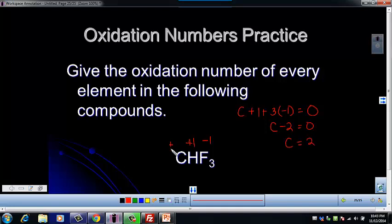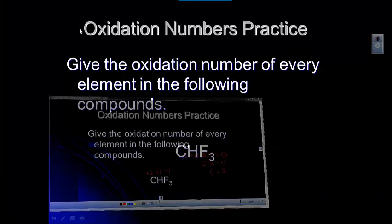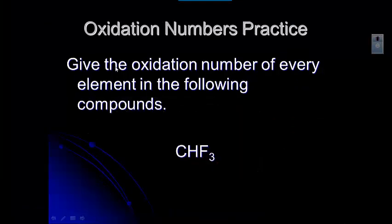So the oxidation number for carbon is plus two. That's how we find the one we don't have information about in the rules. Let's try another one — barium chloride. Look at your rules and see which ones you think might apply to this one.